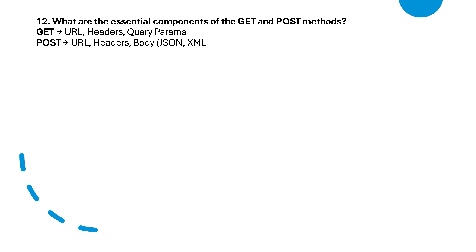What are the essential components of GET and POST methods? For GET, the components are: URL, headers, and query parameters. For POST, the components are: URL, headers, and a body — which can be in any format such as JSON, XML, HTML, raw, or others.